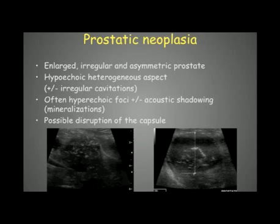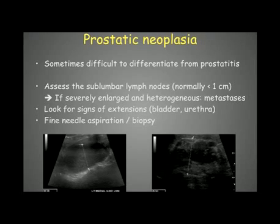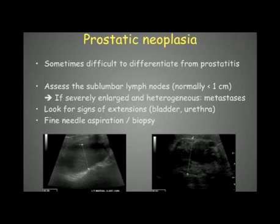There may also be disruption of the prostatic capsule. Prostatic neoplasia can be difficult to differentiate from prostatitis. To help, assess the sublumbar medial iliac lymph nodes — normally less than 1 cm — if they are severely enlarged (here almost 3 cm), hypoechoic, or very heterogeneous, this confirms metastasis and therefore neoplasia. Extension into the bladder or urethra also favors neoplasia. Fine needle aspiration or biopsy under ultrasound guidance can be performed for definitive diagnosis.